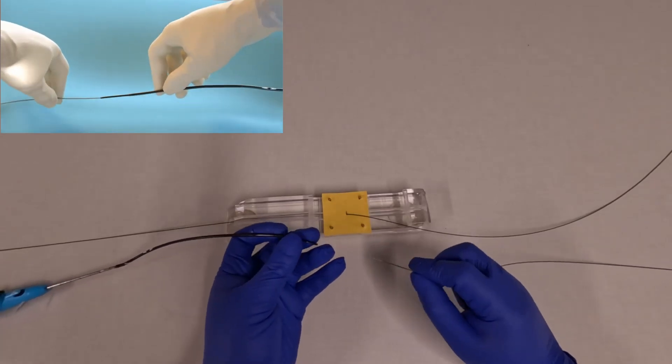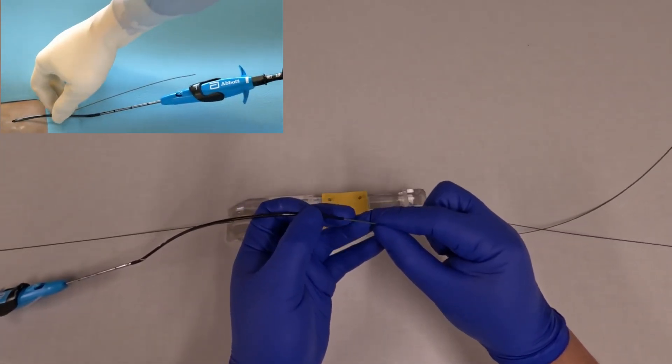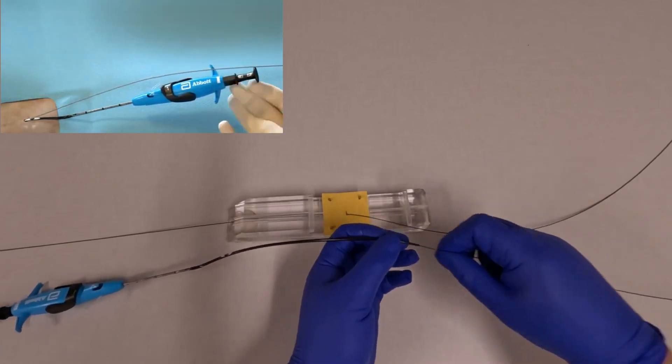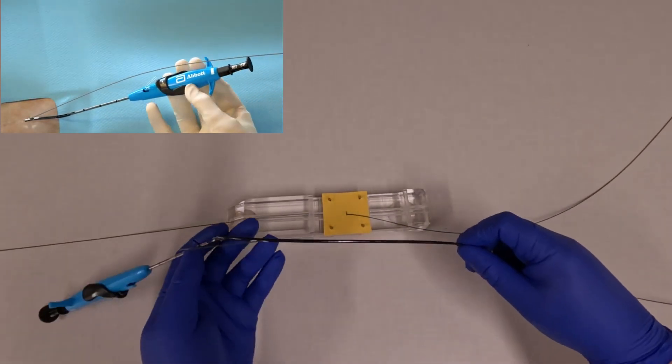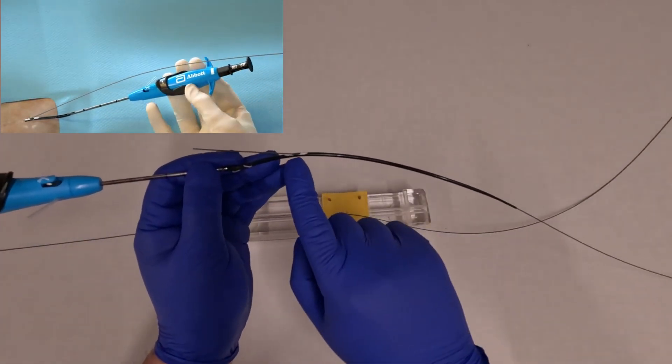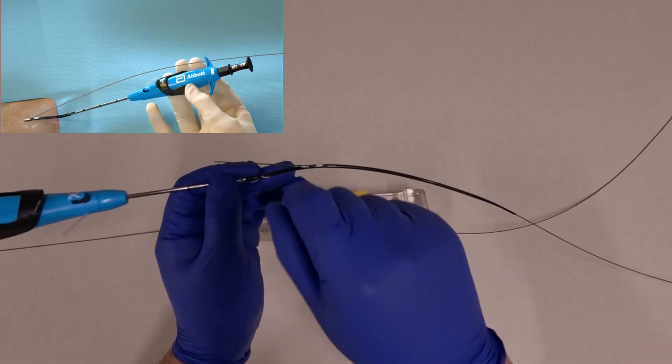The next step is to load the device onto the wire. Remember that you would be maintaining hemostasis either manually or by a second person. The wire will come out of the wire exit port here.